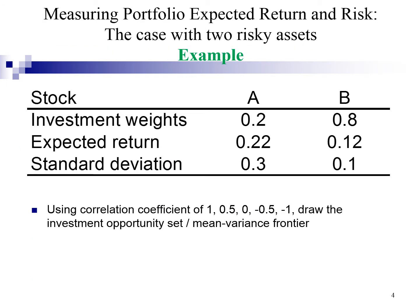Throughout this video, we are going to use this example. There are two assets: asset A and asset B. Asset A has a higher expected return of 22% as well as higher risk of 30%. Asset B has a lower expected return of 12% and a standard deviation of 10%. We are going to draw an investment opportunity set for asset A and B based on different levels of correlation.